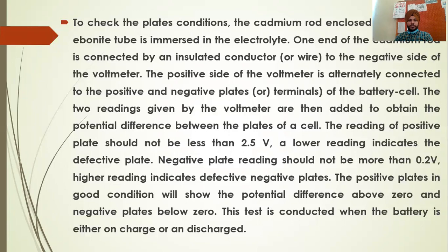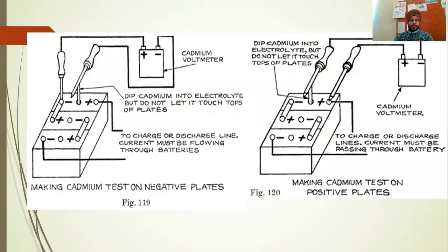Whether the battery is fully charged or discharged, we will test. Looking at the test diagram: the voltmeter is always connected to the cadmium rod, and the ebonite coating is always connected to the negative plate. The voltmeter is connected to the cadmium rod, which is dipped into the electrolyte solution. The positive side of the voltmeter is connected to the negative side, and the other connection alternates between negative and positive.